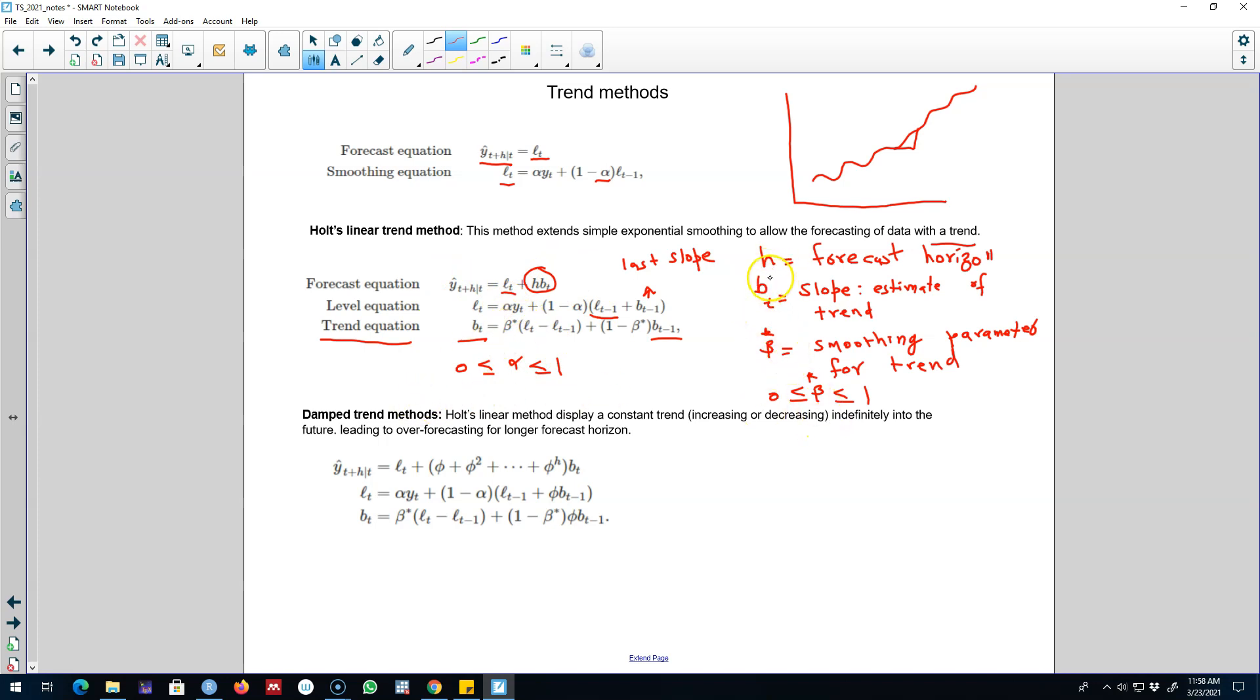Essentially you don't have to use these equations, but the main thing is that you remember all these parameters. So that when you look at the results, you have a pretty good idea that alpha is representing a smoothing parameter for the level equation, beta star is the smoothing parameter for the trend equation, and bt is the slope estimate for the trend, and h is our forecast horizon, etc.